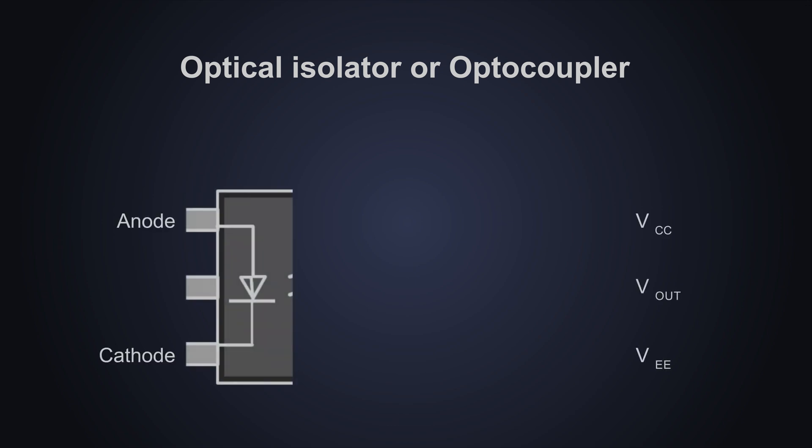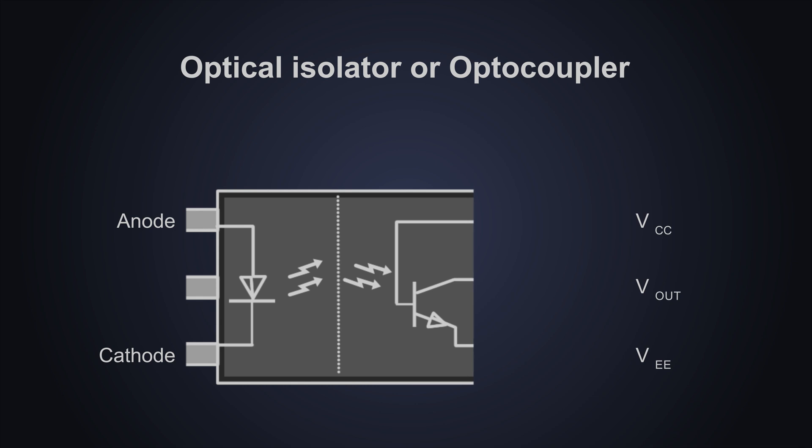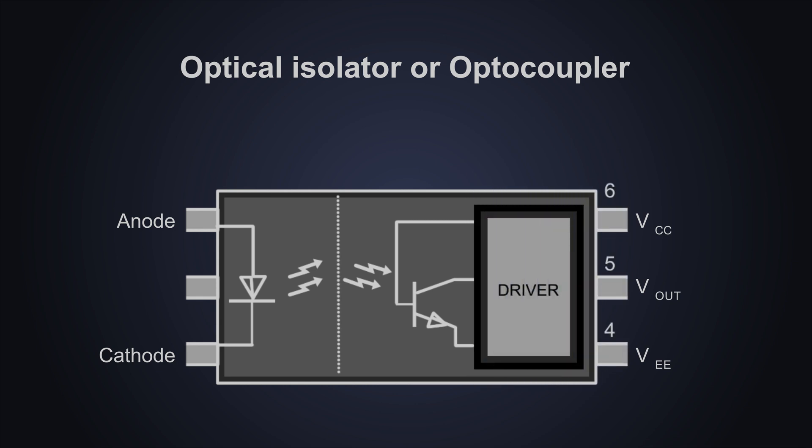Let's start with the first one. The optical isolator or also known as optocoupler. It consists of an input LED, a receiving photo detector and an output driver. The working of the optocoupler is straightforward. When a sufficient electrical signal is provided to the LED, it emits light which is detected by the photo detector and the other side turns on.